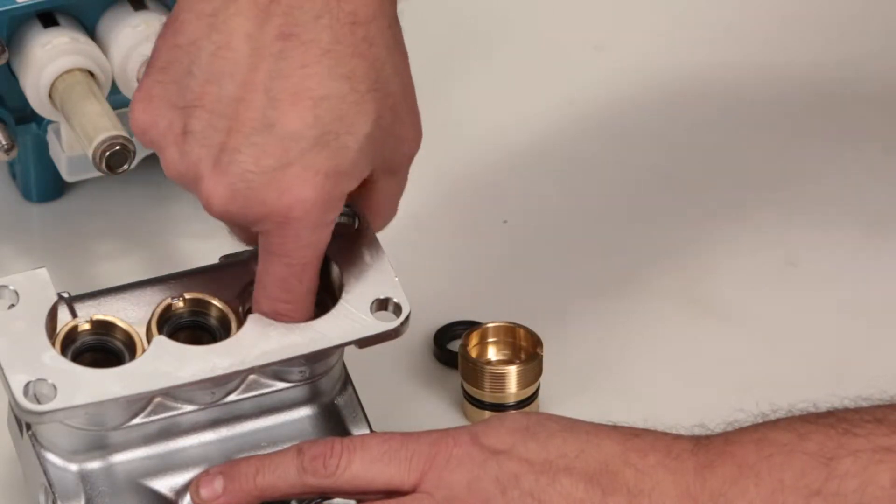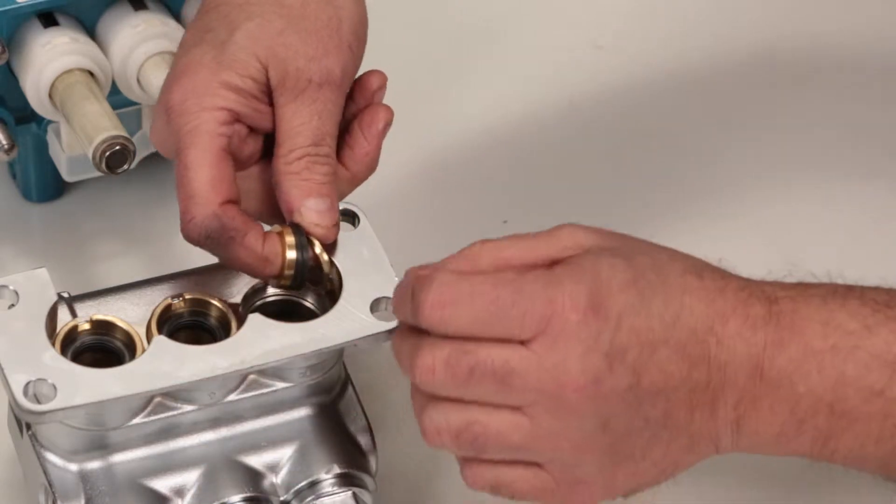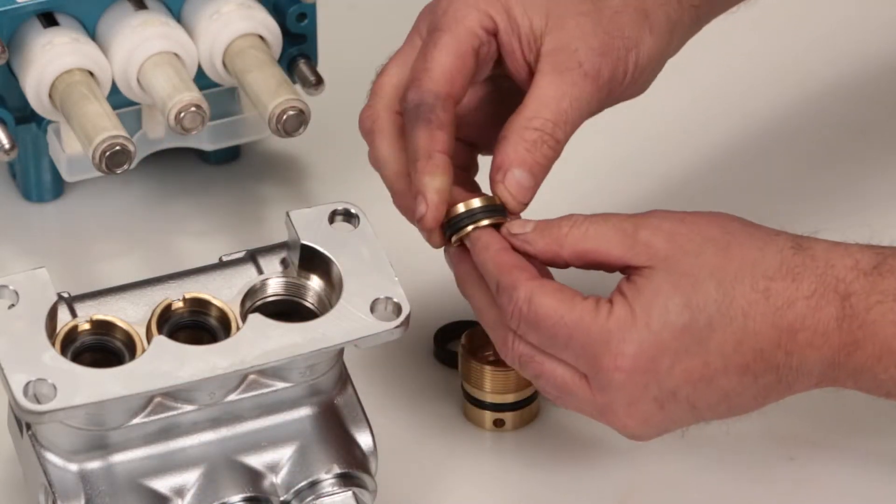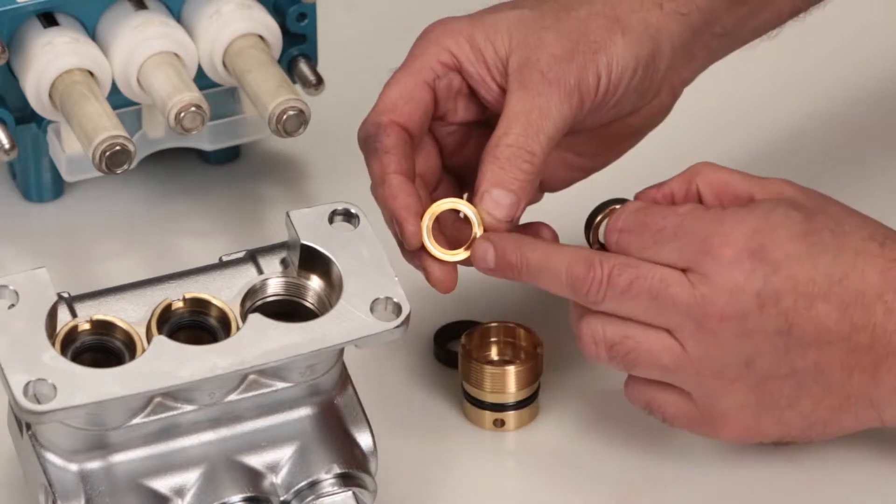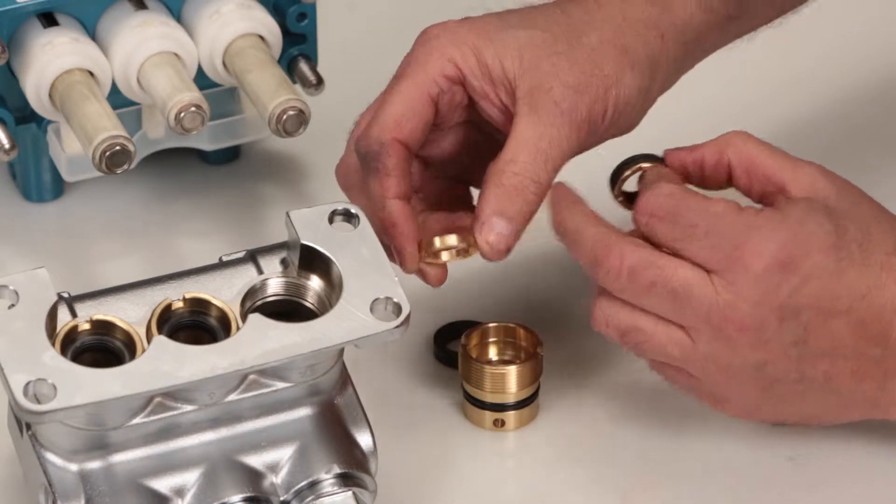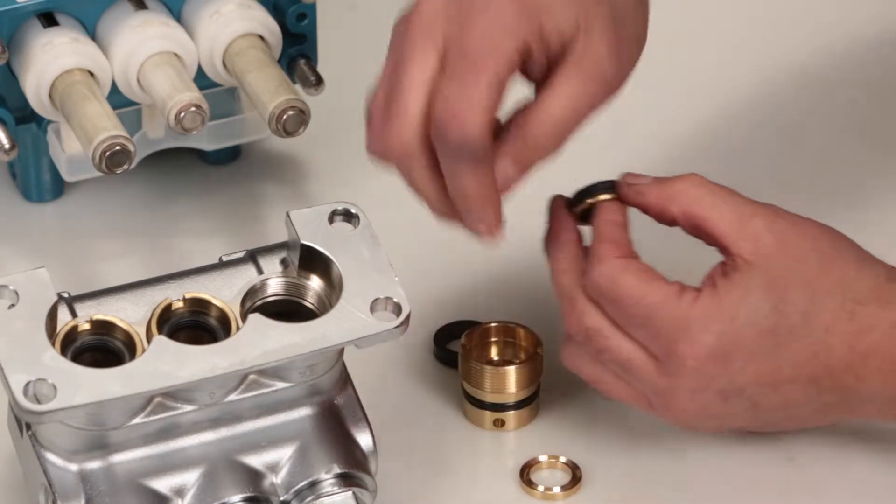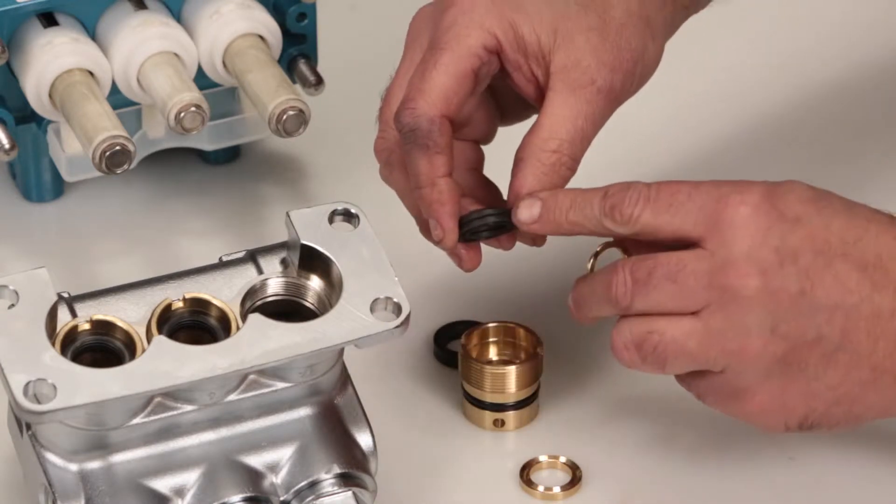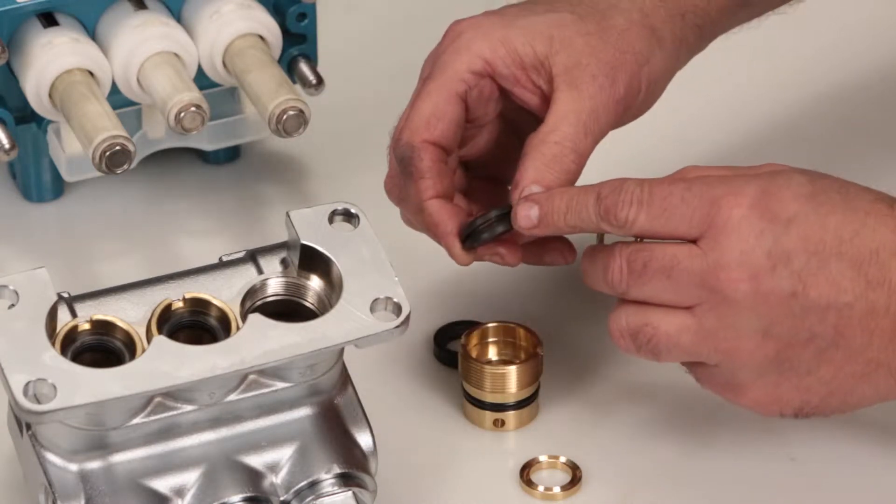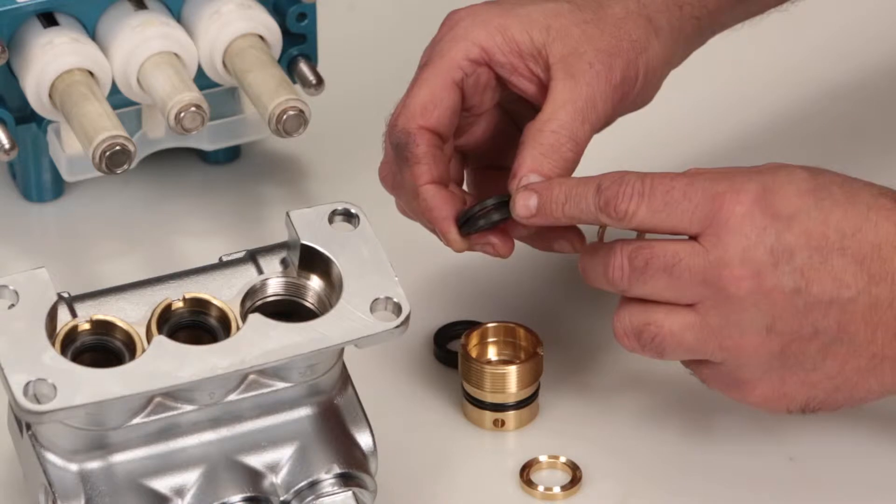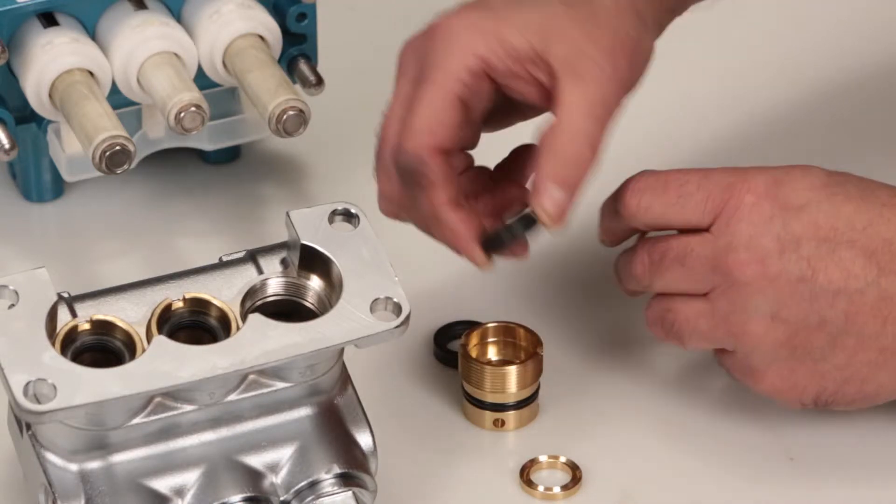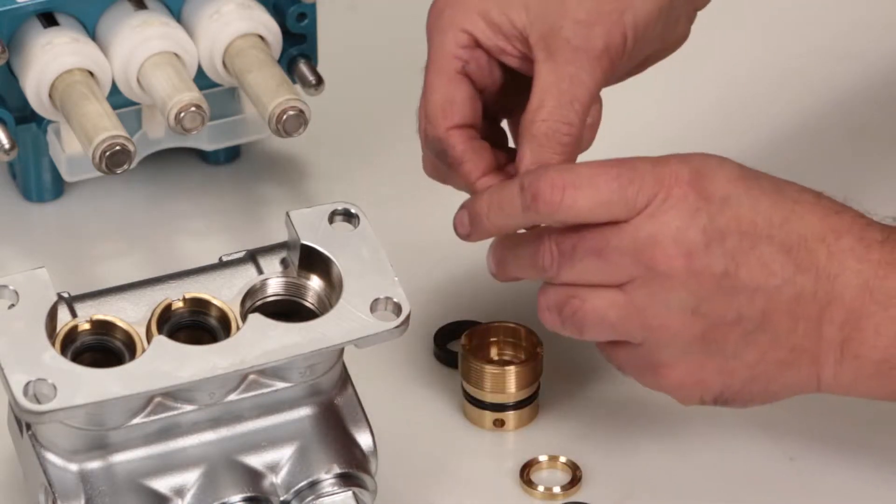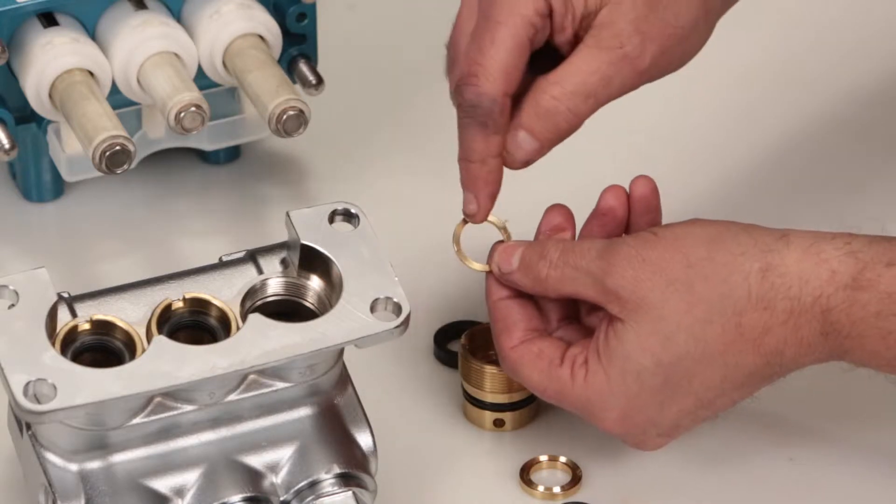Next, remove the four piece high pressure v-packing assembly. Inspect the female adapter for wear or damage. Inspect both v-packing inside and outside diameters for excessive wear or damage. Inspect the male adapter for any signs of wear or damage.